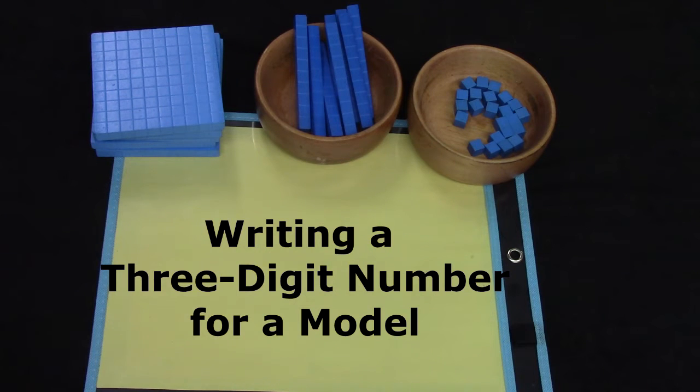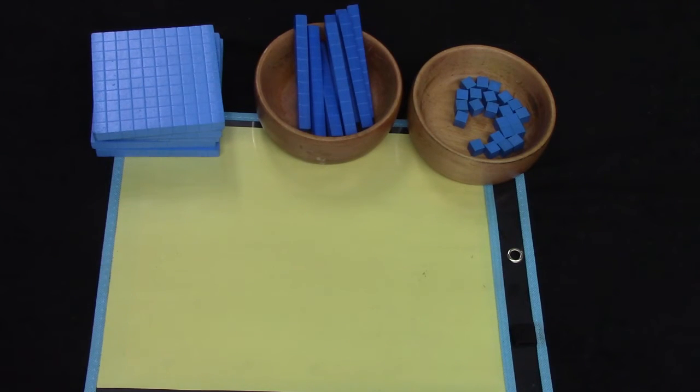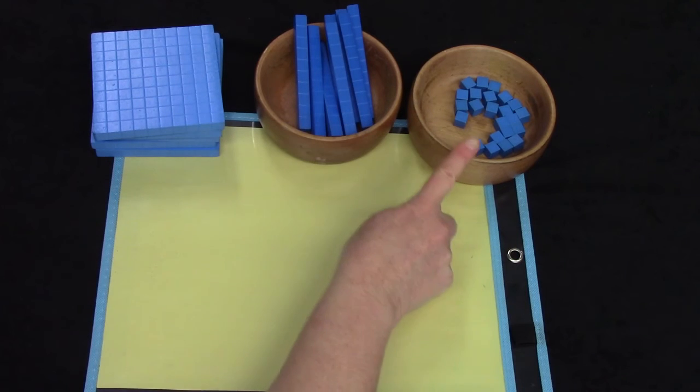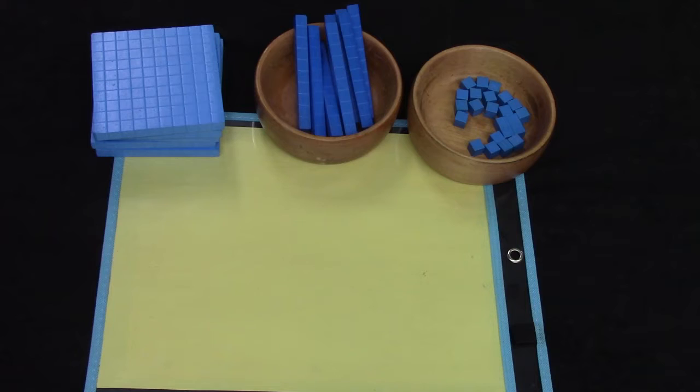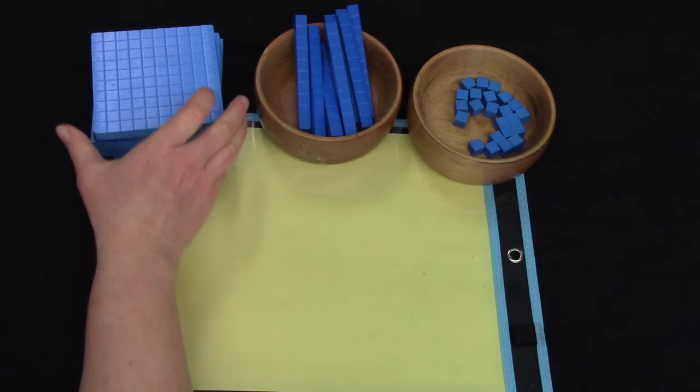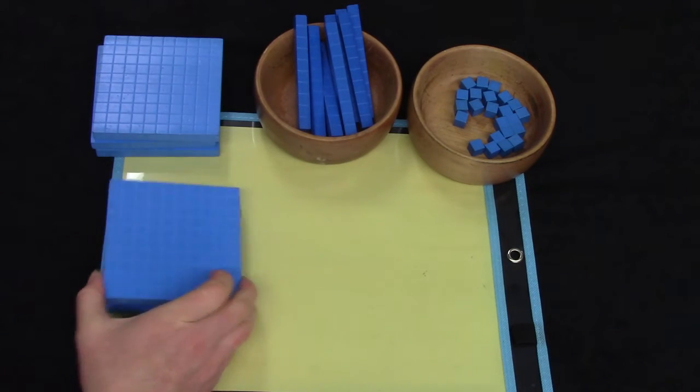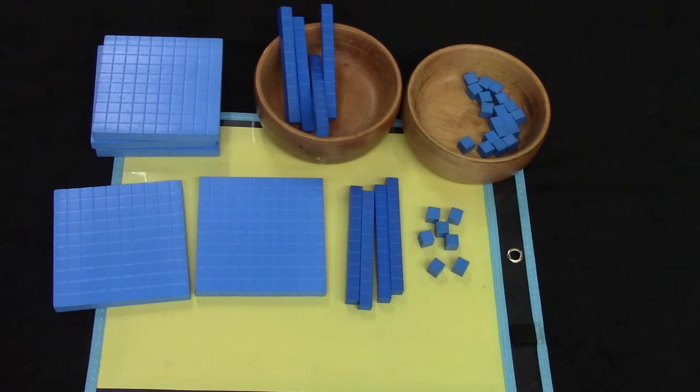Hello class! Welcome to today's math lesson. Today we are going to be writing a three-digit number for a model. Our model could be some of our base 10 blocks or it could be a picture. For our first one I think I'm going to use the base 10 blocks. Let's look at the base 10 blocks here and write a three-digit number.